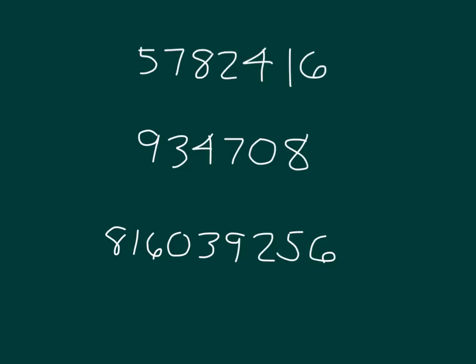Where would I place my commas for each of these numbers? The first one is 5, 7, 8, 2, 4, 1, 6. Starting from right to left: one, two, three places — place a comma there. One, two, three more places — place a comma there. So we have five comma seven, eight, two comma four, one, six.